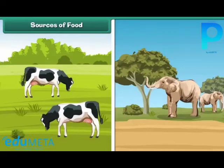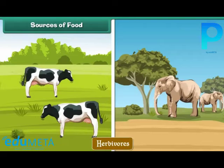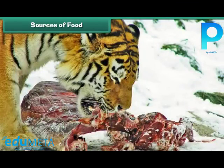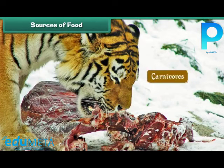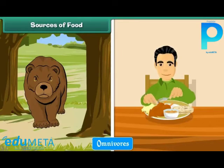Some animals get their food from plants — they are called herbivores. Cows and elephants are examples of herbivores. Some animals kill and eat other animals for survival — they are called carnivores. Tigers are examples of carnivores. Some animals get their food from both plants and animals — they are called omnivores. Bears and humans are examples of omnivores.